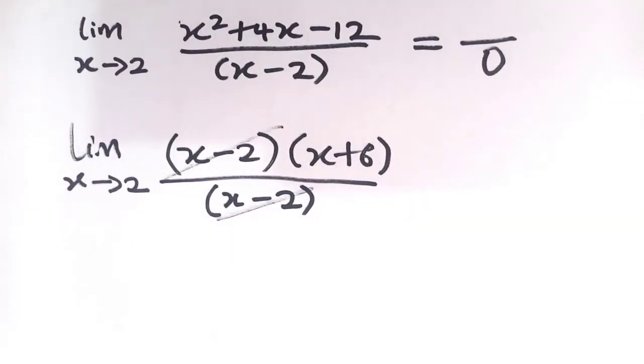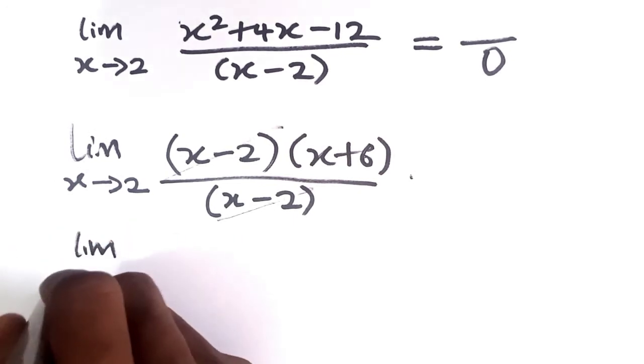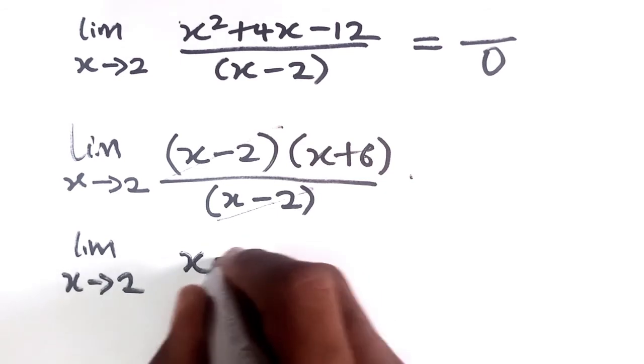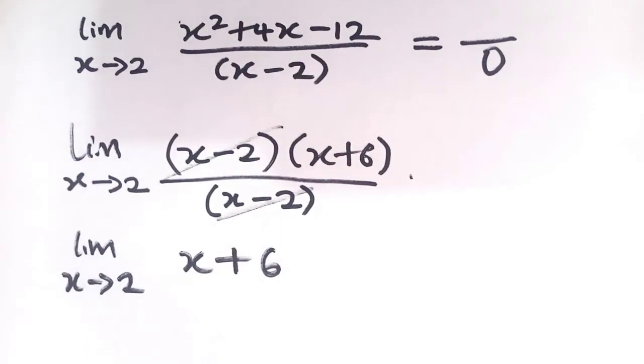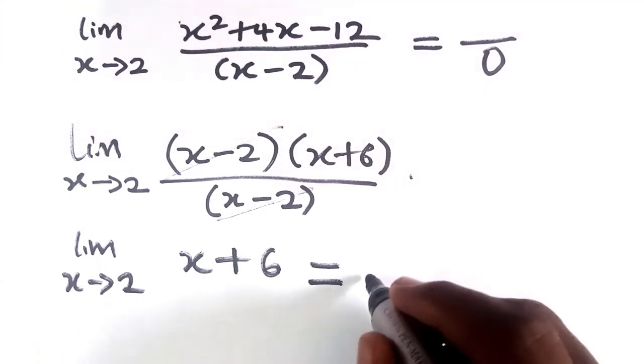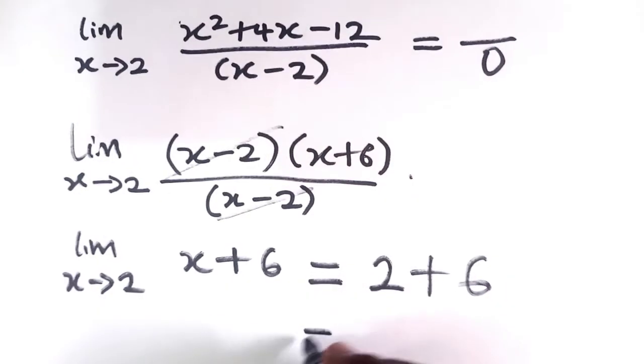And then we'll be left with limit as x tends to 2 of x plus 6. So anywhere we see x we'll substitute it with 2, so we have 2 plus 6 which is equal to 8. And this is how we get the limit of the function.